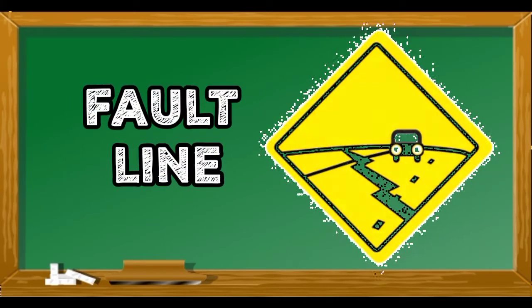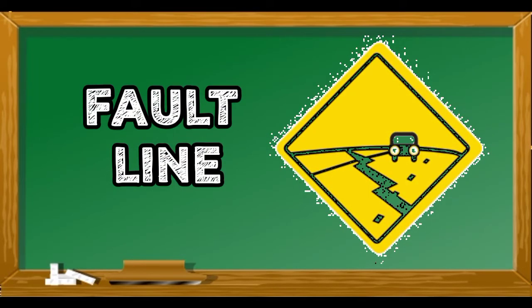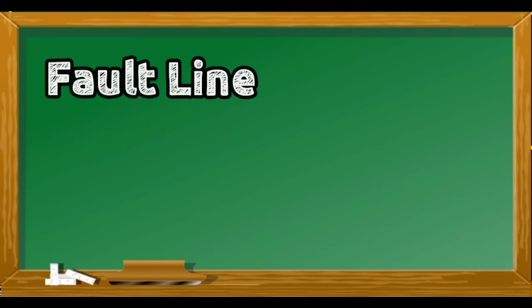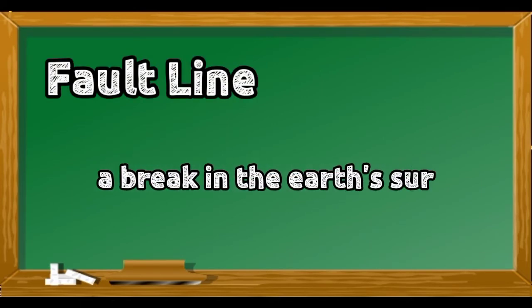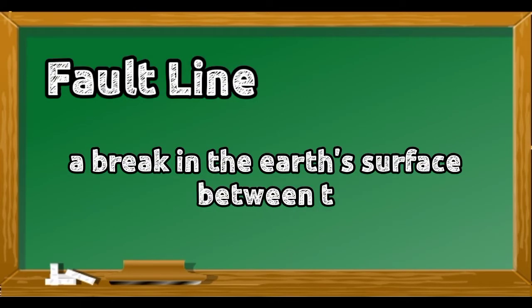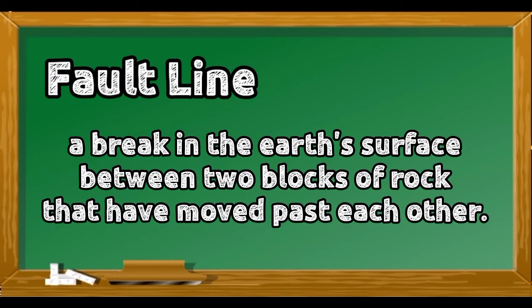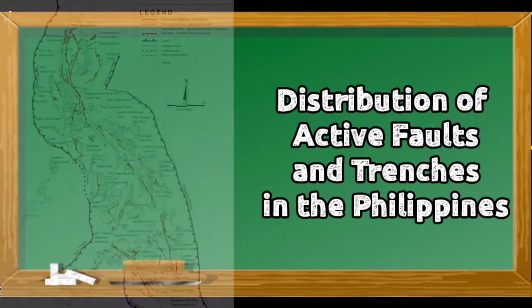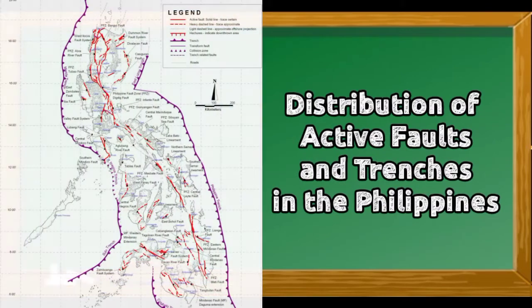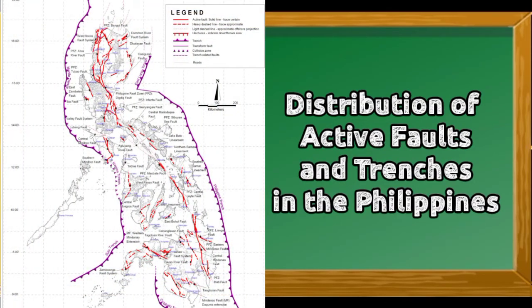Fault Line — it's a break in the Earth's surface between two blocks of rock that have moved past each other. Here we have the distribution of active faults and trenches in the Philippines.